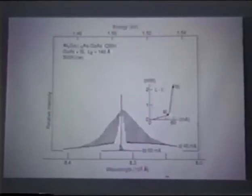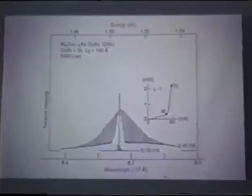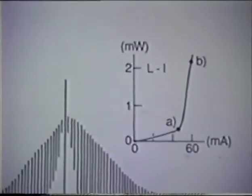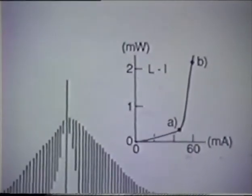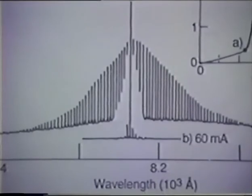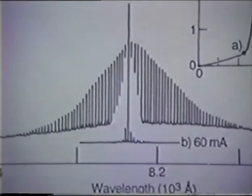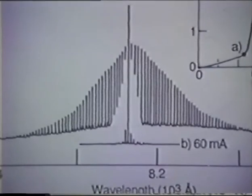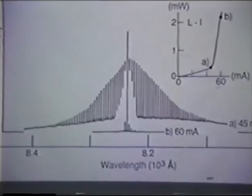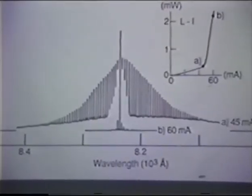If you inject carriers, you've got high conductivity, they tend to recombine. And in certain semiconductors, they recombine by emission of light of a wavelength approximately equal to the band gap. If the semiconductor is in the form of a cavity, there will be many possible normal modes for the electromagnetic radiation from the recombination of the electrons and holes that are injected.